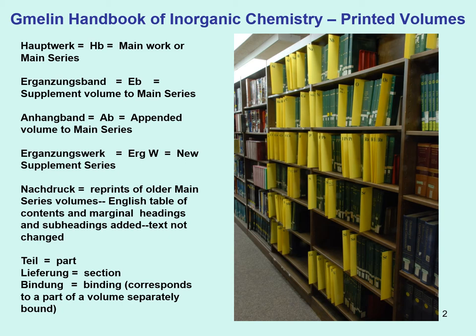Here is what the printed books look like on the shelf — this is the collection at City College. When you visit your campus libraries, check if they have these volumes. The books were originally printed only in German. All the indications on the bindings help you identify exactly which book you have, since each element has its own series, and you want to be able to return to it.